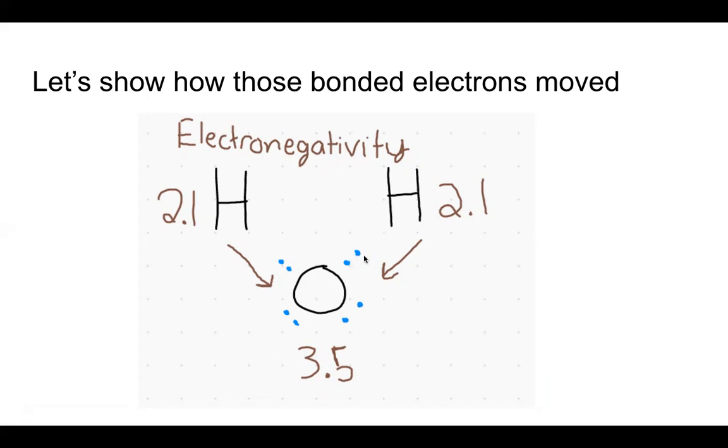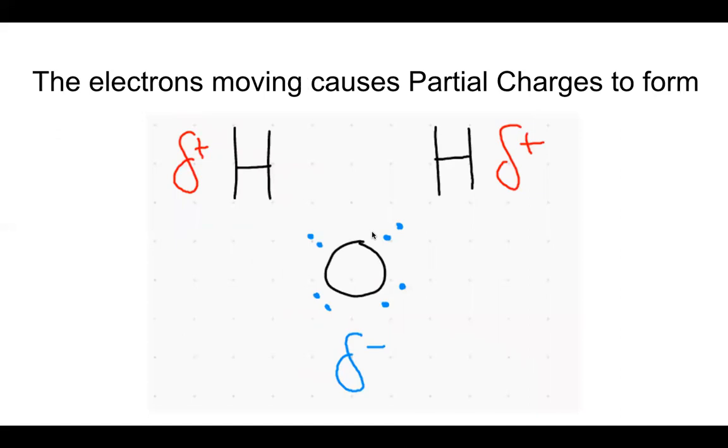And I said, okay, the line doesn't show me where the electrons are, but if I drew the two electrons in, they would be closer to oxygen. They moved closer to oxygen. We no longer had a line. Electrons don't stay right in the middle.